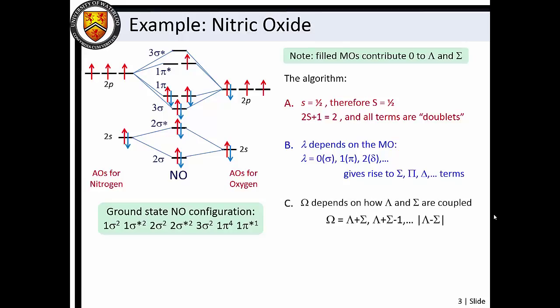To determine the range of allowed omega values, we apply a numerical series which has limits of lambda plus sigma and the absolute value of their difference. Here we see that doublet pi 3 halves and doublet pi 1 half terms are possible.